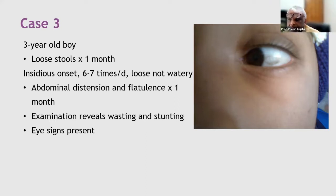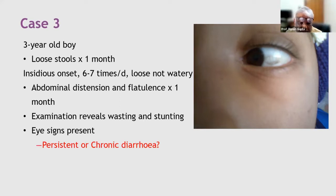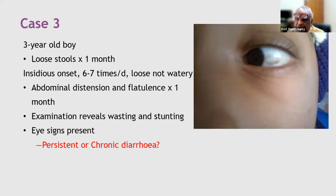The child has moderate wasting and moderate stunting. Looking at the eye picture, participants identify vitamin A deficiency and Bitot's spot. The child is having a deficiency of vitamin A, which is a fat-soluble vitamin. This fits well with malabsorption, but first let's address the basic diagnostic question.